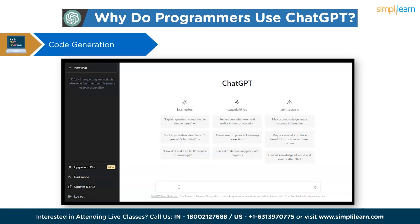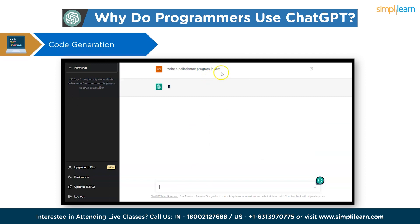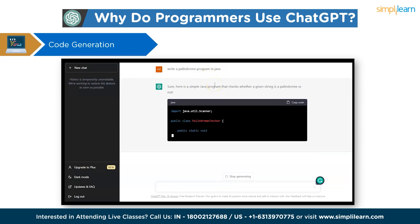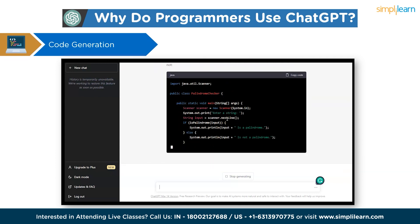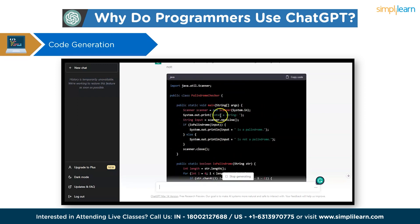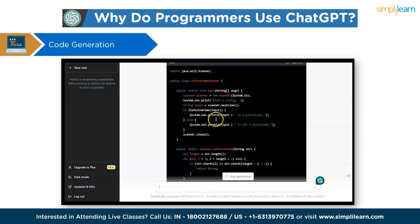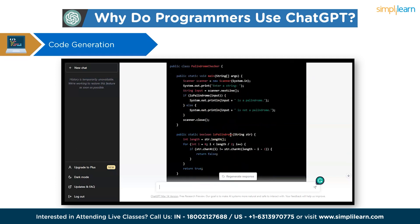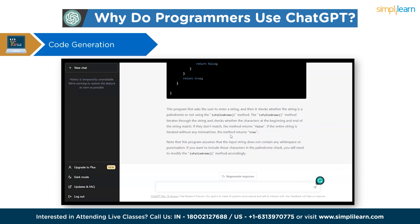Open ChatGPT and type any program you want it to generate. Here I'll type: 'Write a palindrome program in Java.' Using the Java programming language, it generates the whole program. As you can see, it has used a class name called PalindromeChecker and a method called isPalindrome. It also provides an explanation of the program, covering why isPalindrome is used as a method, how the for loop works, the if condition, and so on.